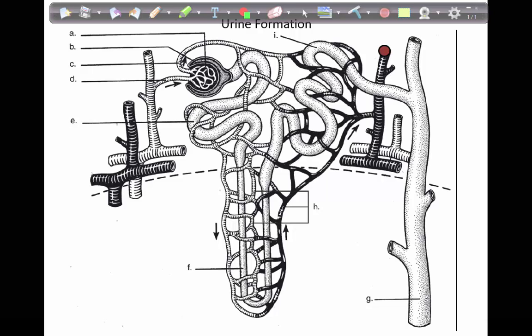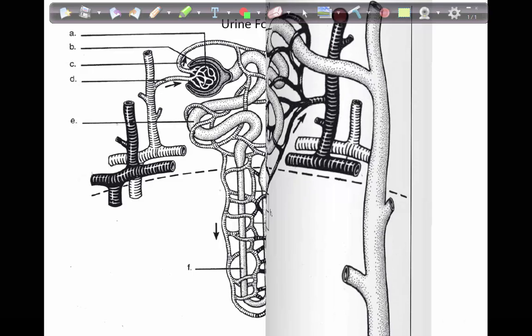Note as well that with this diagram, we only see one nephron and its associated vessels. There are over a million nephrons in each kidney, which means that there will be over a million associated blood vessels.